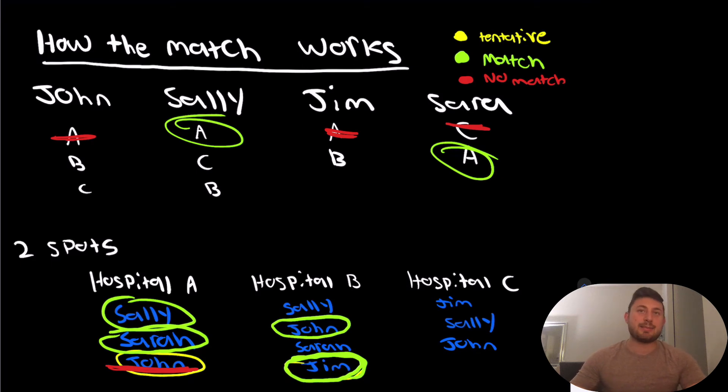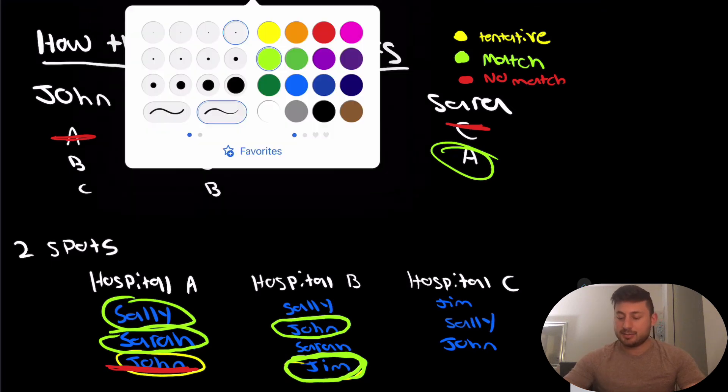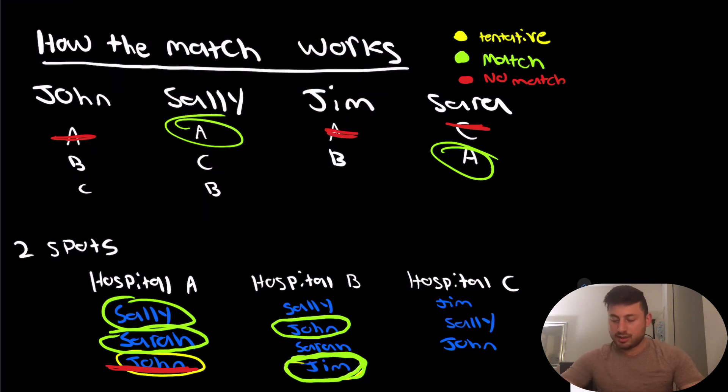Now, if a hospital has a spot that goes unfilled, they can actually be a part of something called the SOAP. And if you're interested, I'll make another video describing the SOAP in detail. But basically, for hospitals or programs that have unfilled slots, and for applicants that don't actually find a match in that year, they have an opportunity to enter the SOAP and try to interview and get a position. It might be in a different specialty that they were originally applying to, or maybe in the same specialty in a program they didn't originally apply to. There's a lot of different factors that come into play with the SOAP, but it's a chance to actually find a match in that same year.